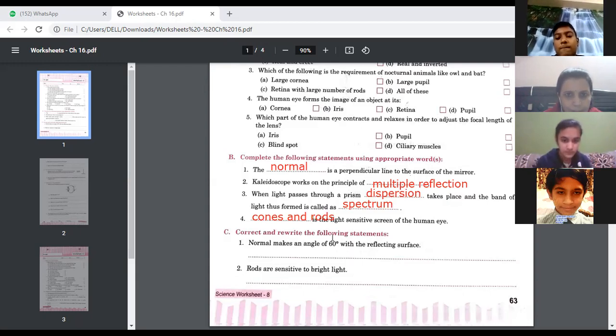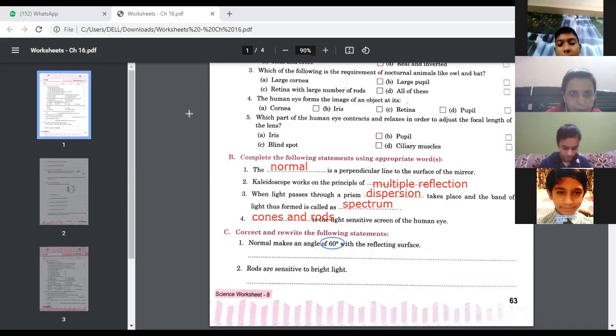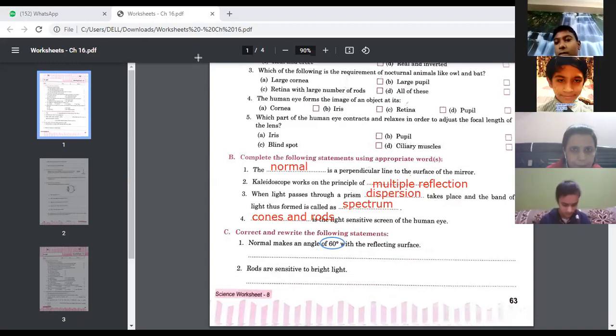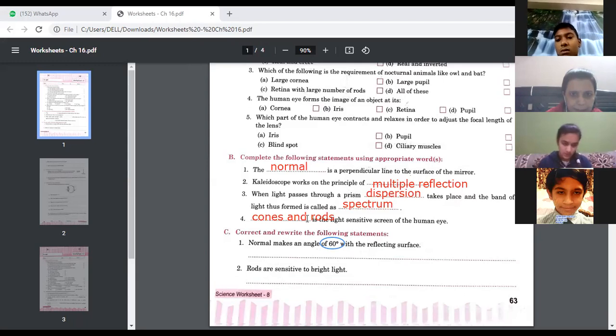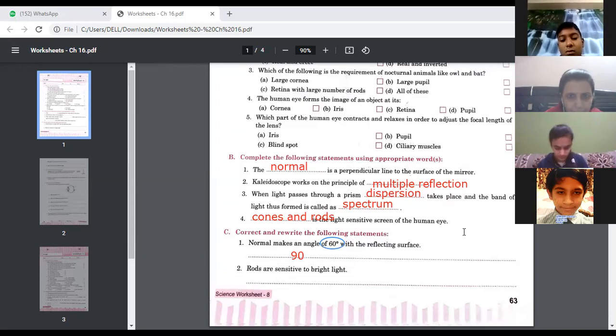Next question number C part, correct and rewrite the following statements. Normal makes an angle of 60 degrees. Is it true with the reflected surface? Ma'am false. It makes an angle of 90 degrees. Do the correction children, 90 degree angle is there.